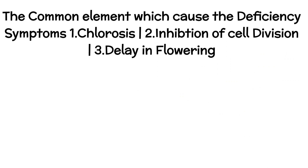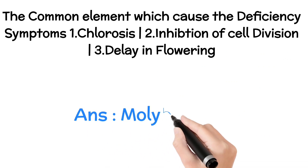Question 2: What is the common element causing chlorosis, inhibition of cell division, and delay in flowering? Chlorosis has 'MONKS,' inhibition of cell division also has 'MONKS,' and delay in flowering has 'MONS' — all contain molybdenum. So the answer is molybdenum. These are higher order thinking questions, but NEET will mostly have basic questions, so don't worry — but do practice these types as well.